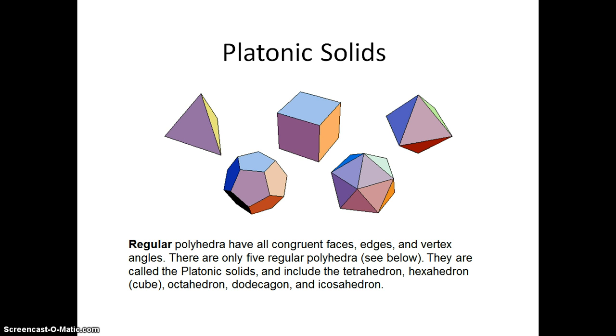Their names are tetrahedron, hexahedron, octahedron, dodecahedron, and icosahedron. That one snuck in there. In your homework, you will be asked to find the number of sides that each of these polyhedra have.